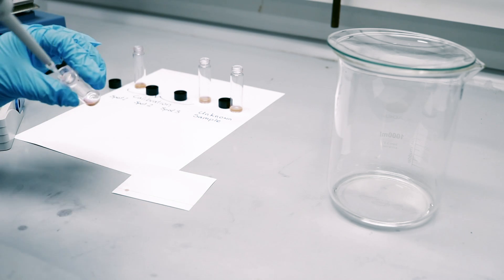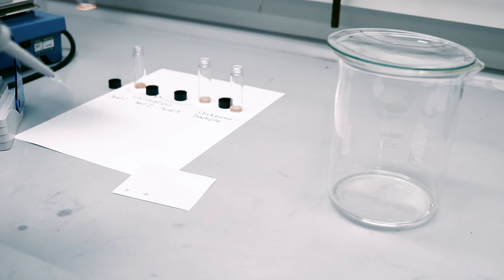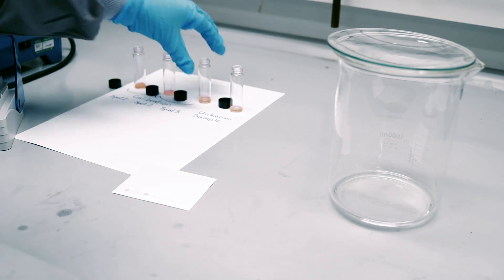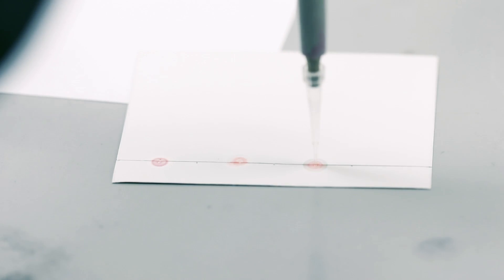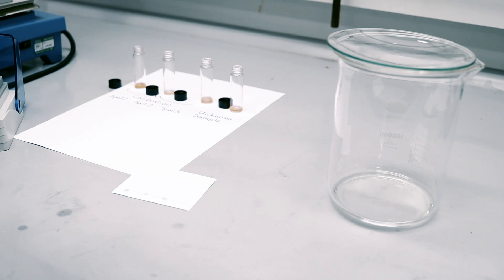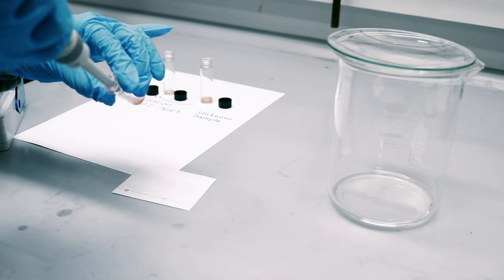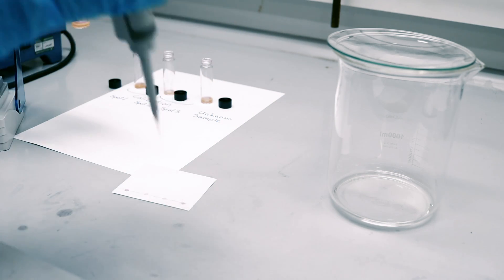To use QTLC for quantification purposes you need a calibration curve in addition to the liquid you want to test. On this side you spot known concentrations of the target molecule, your calibration curve, and on this side you spot the sample with an unknown concentration.